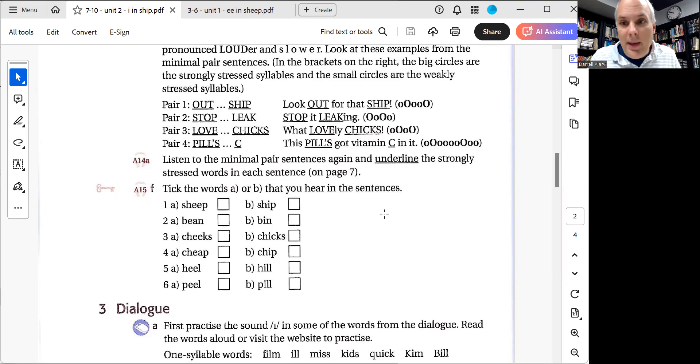He wants a sheep for his birthday. I'm going to read it fast, I should have warned you. I'm not going to read that again. Number two. That's a very small bin. The third one. Look at these chicks. Number four. That's a cheap machine. Number five. What a high heel. And then the last one, number six. Don't eat that pill.